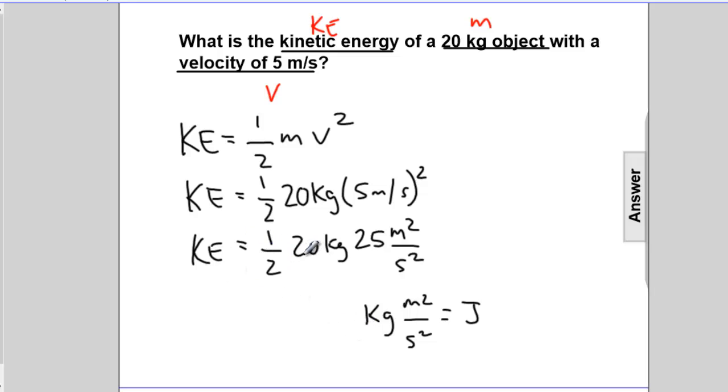Doing the math: one-half times 20 is 10, times 25 equals 250 kg meters squared per second squared, or 250 joules of kinetic energy.